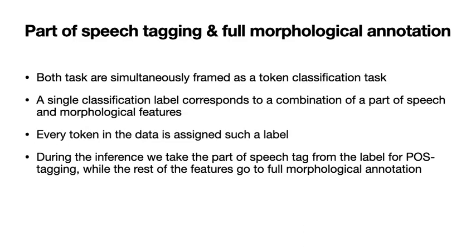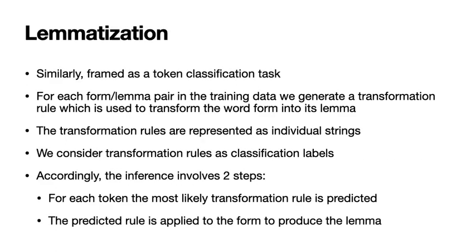We frame part-of-speech tagging and full morphological annotation as a single token classification task. For each token in the dataset, we predict the part-of-speech and the morphological features as a single class represented as a unique string. We treat lemmatization as a token classification task as well. However, instead of predicting the combination of morphological features, we predict the transformation rule that allows us to transform a given form into its lemma. The transformation rule is also represented as a single string.